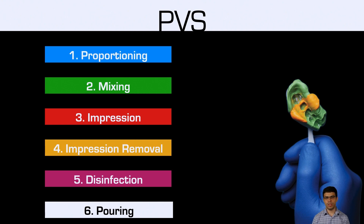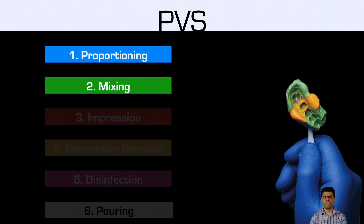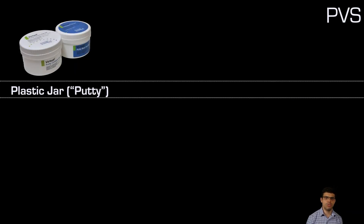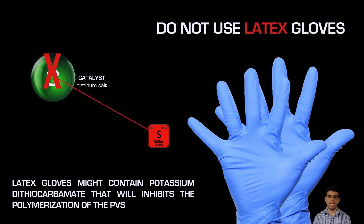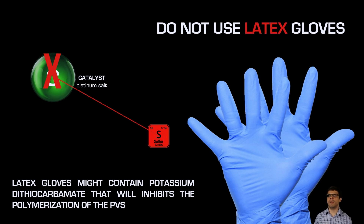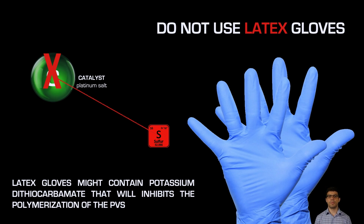PVS follows the same six principles: proportioning, mixing, impression, impression removal, disinfection, and pouring. For proportioning and mixing putty, a critical rule is: do not use latex gloves. The platinum salt catalyst can react with potassium dithiocarbamate found in latex gloves, inhibiting the polymerization of PVS. Always use nitrile gloves or clean hands when hand-mixing PVS putty.